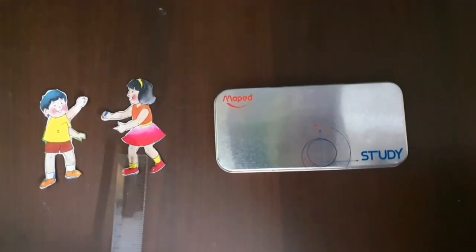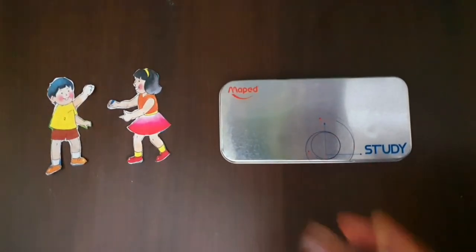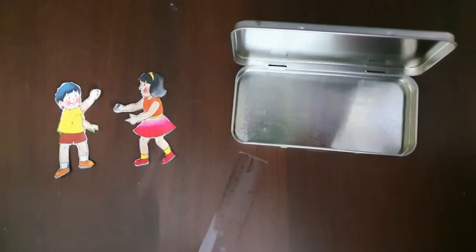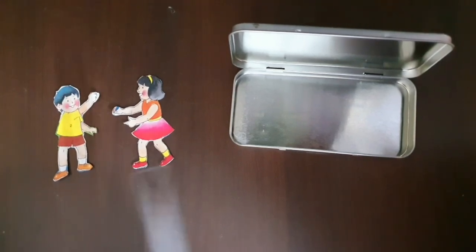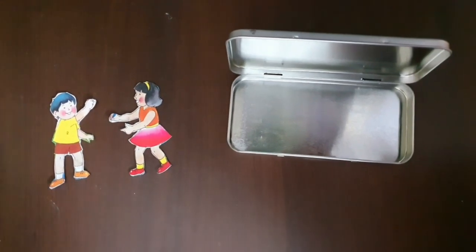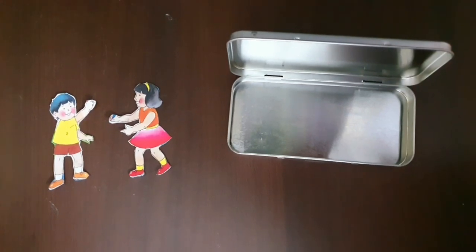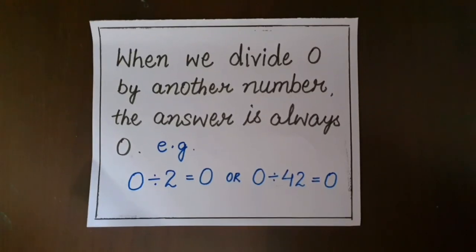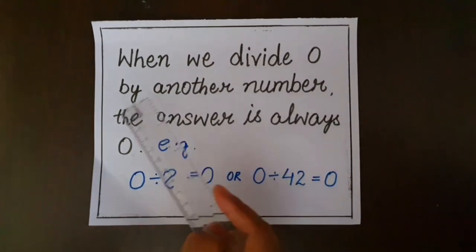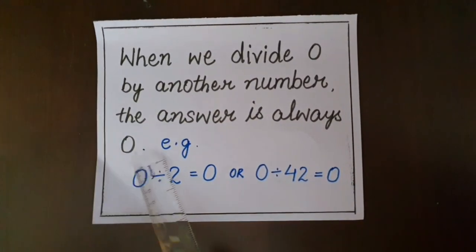Now these two students want to take out pencils from this geometry box — let's open it. Oh, but it's empty! There's no pencil in the box, or we can say there are zero pencils in the box, so these students can't get any pencils. Now we get to know that when we divide zero by another number, the answer is always zero.